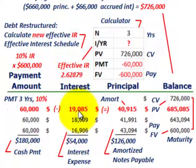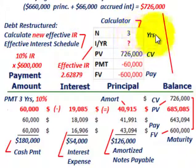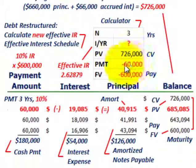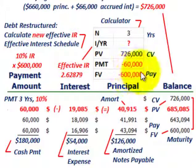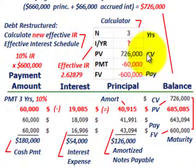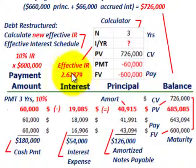Now we have to calculate the new effective interest rate for this amortization. Using a financial calculator, you put in the number of years — three years — and determine the new effective interest rate. Take the present value, which is the $726,000 carrying amount of our debt. Then put in the payments — negative $60,000 per year — and the future value, what they're going to have to pay out, is negative $600,000. Hit the interest button, and you come up with a new effective interest rate of 2.6289%. That's effectively what Corporation A is going to be paying Bank B in interest.